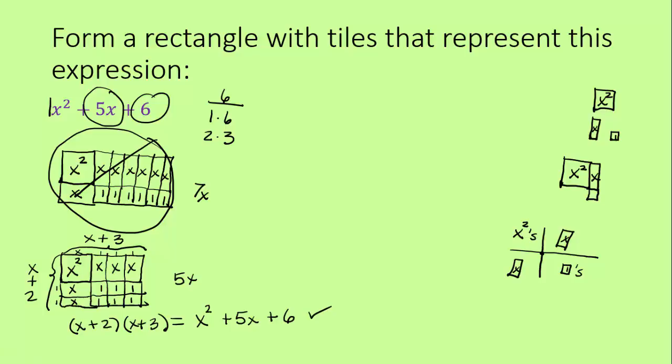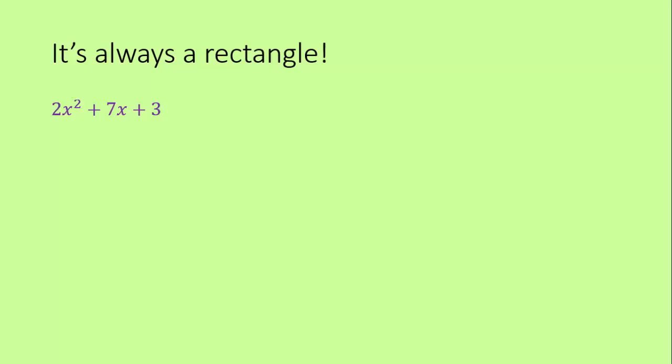You can also get the answer by using the distributive property, or as some people call it, the foil method. That should come out the same as the diagram. And you need to know how to do this both ways eventually. Let's try one more example. Remember, it always has to be a rectangle. It can't be some crazy L-shaped composite area thing. It has to be a rectangle. This time I have two x squared. So let's start with that. The only way to arrange two x squares is side by side or up and down. And it doesn't really matter which way you start with. I'm just going to do them side by side.